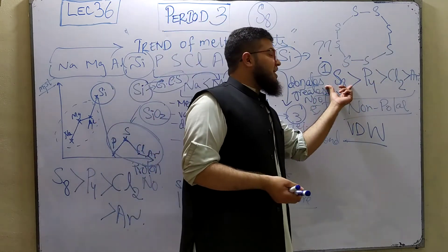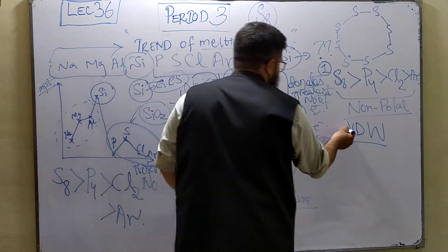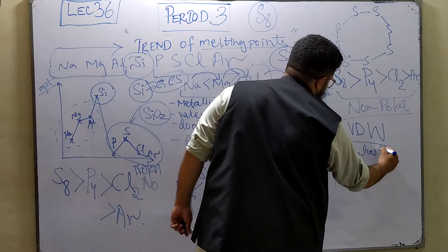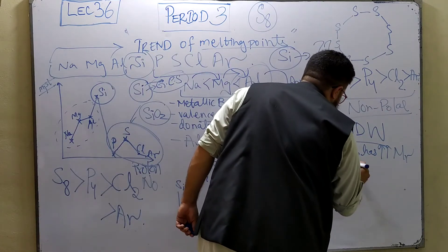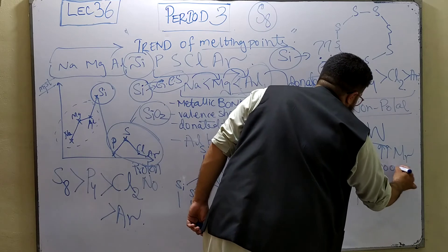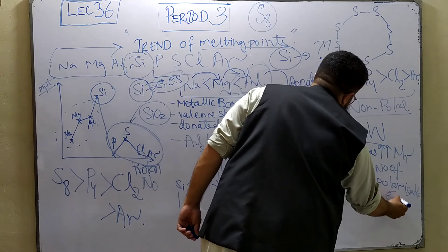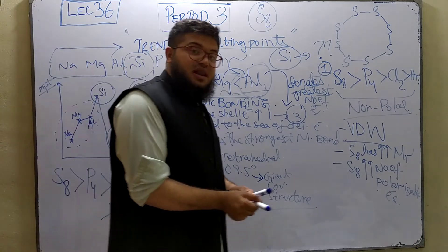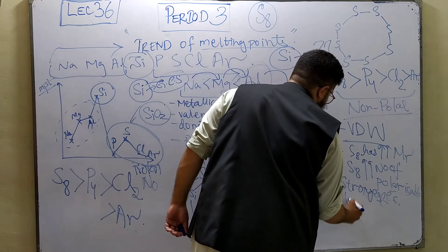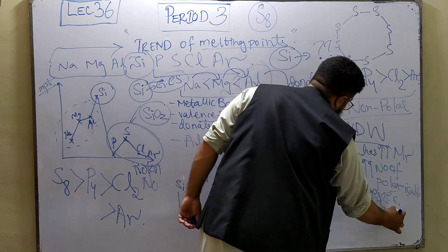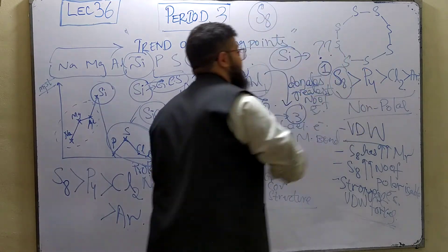The first mark is also for explaining that S8 has eight atoms per molecule, phosphorus has four, chlorine has two, and argon has a single atom. The second mark is that S8 has the highest molecular mass (MR). Van der Waals forces depend upon the MR — a higher MR means the greatest number of polarizable electrons. Therefore, S8 has the strongest van der Waals forces, and the greatest amount of energy is needed to overcome them in the case of sulfur, giving it the greatest melting point.